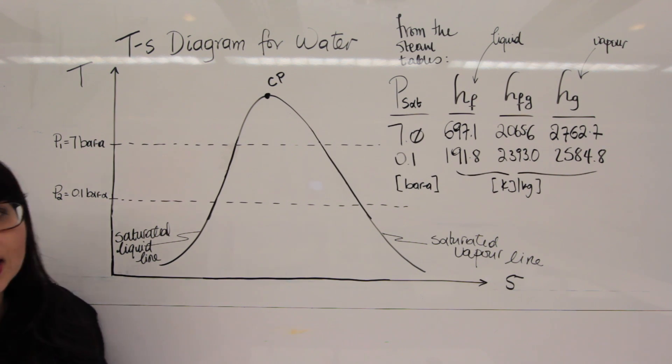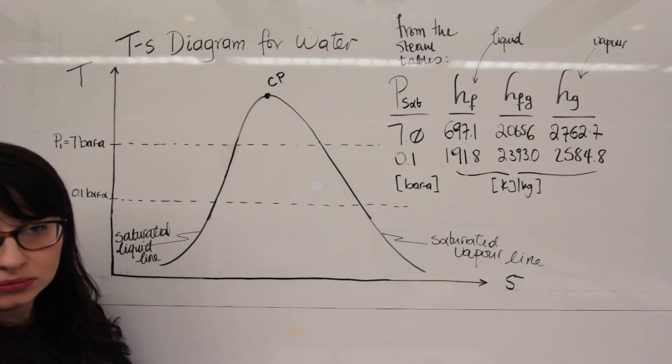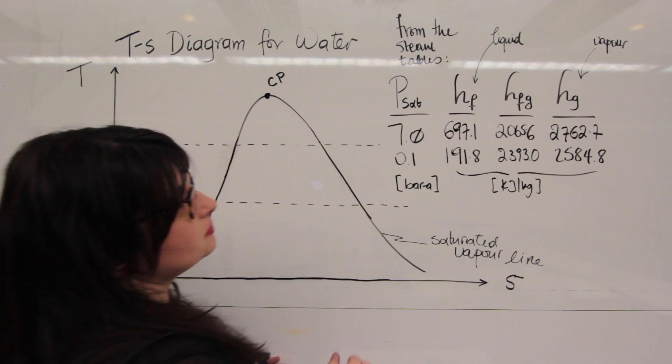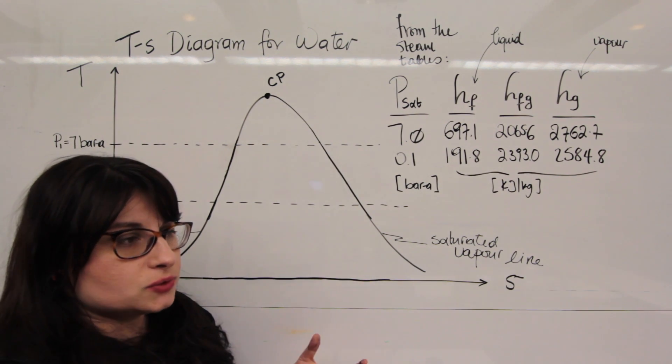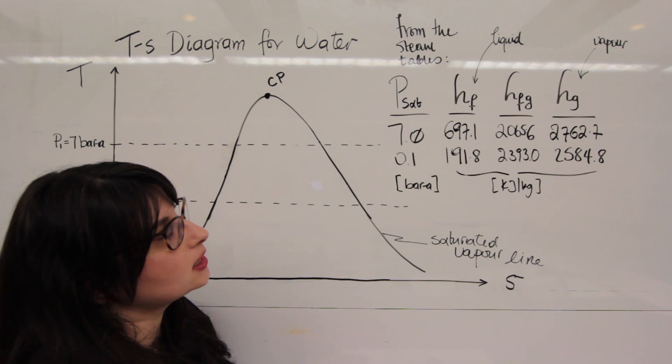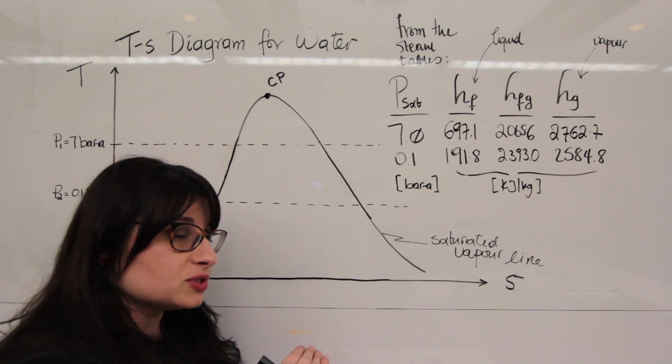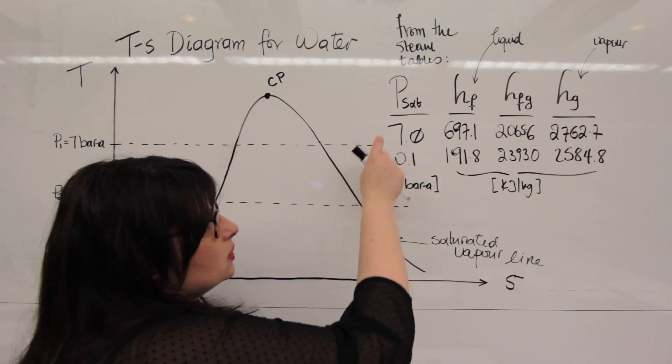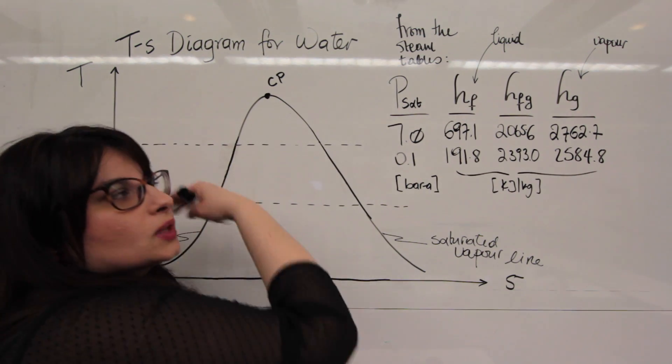All right, so let's take a look at the TS diagram in relation to the steam tables. I took these numbers from the steam tables, if you remember. The steam tables are essentially tables where we collect various properties for the fluids we're talking about. The saturated steam tables for water come in two flavors. One's in increments of pressure, the other one's in increments of temperature. Here we're talking about the pressure ones. So, by notation,